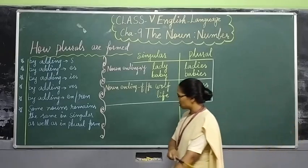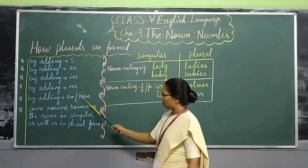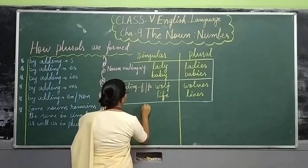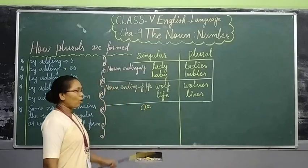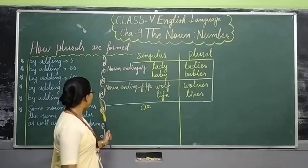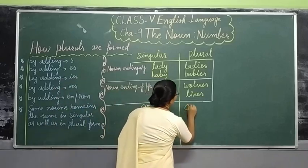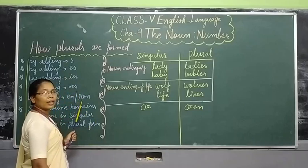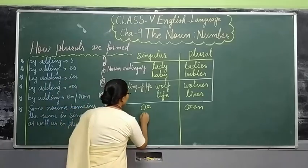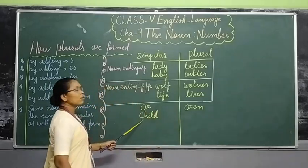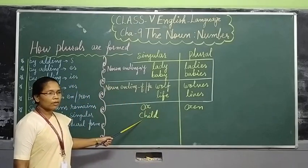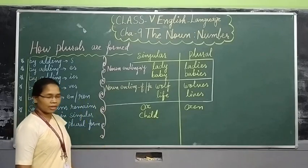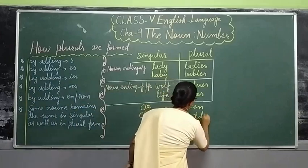There are also some nouns that form their plural by adding -en or -ren. For example, 'ox' is singular — while changing into plural form, you add -en to get 'oxen'. Similarly, 'child' is singular. While changing into plural form, add -ren to get 'children'.